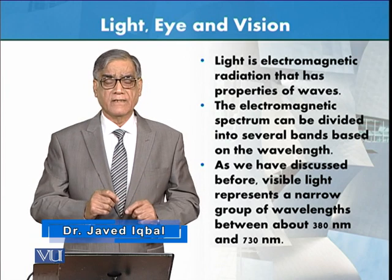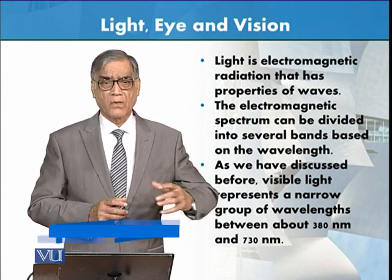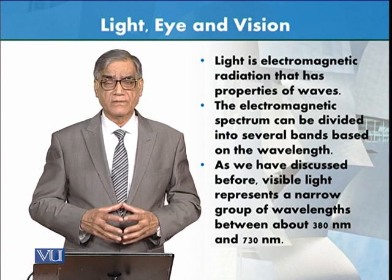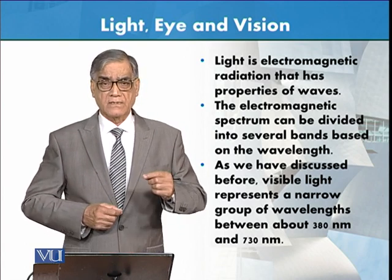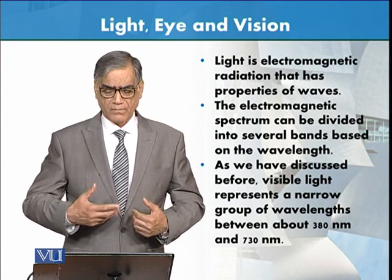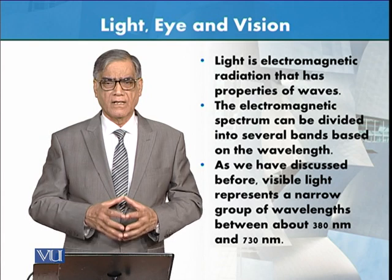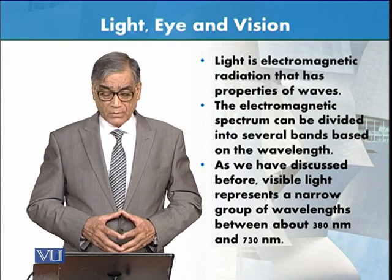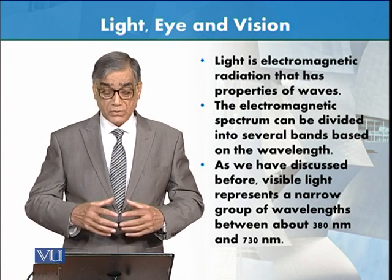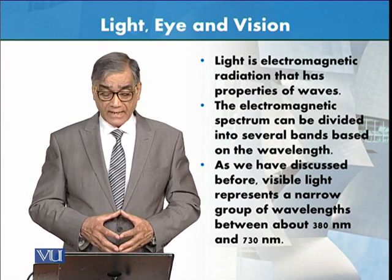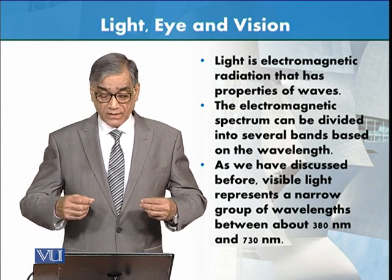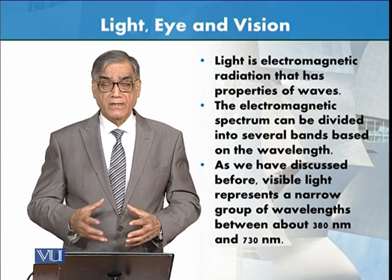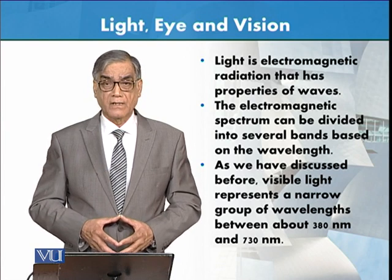If we keep a beam of light on a prism, it is diffracted, and then we can see the seven different colors. Why are there different colors? Because of the different wavelengths. This range generally runs from 400 to 700 nanometers — that is the wavelength of these colors.